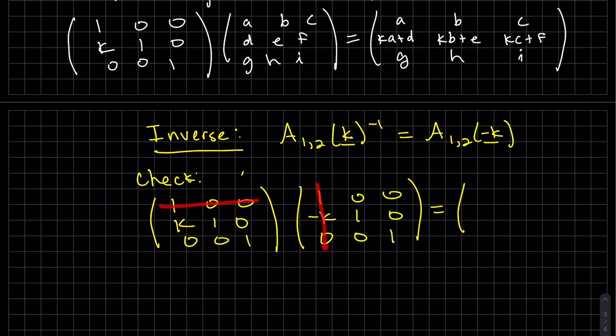This times this. So the two zeros will zero those out, it's still one. This times this, zero. This row times that, looks like it's K plus minus K, which is zero.